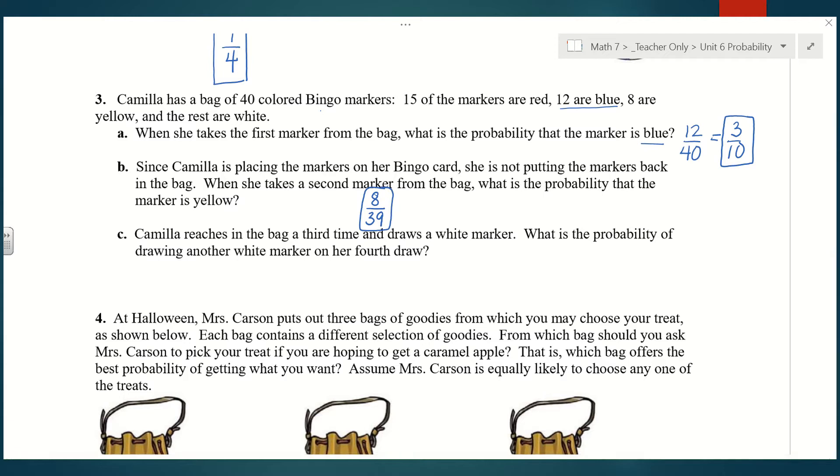Part C, Camilla reaches in the bag a third time and draws a white marker. What is the probability of drawing another white marker on her fourth draw? We have to think about this. We already have two markers taken out of the bag, now she's taken a third marker out and it's white. So we're already down to 38 total markers in the bag. If she's now going to select a fourth marker, we're down to 37 to choose from. Currently there are, let's see, 15 are red, 12 are blue, and 8 are yellow. The rest are white.